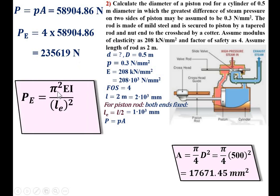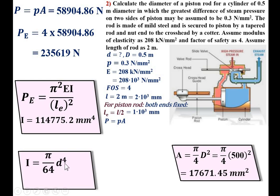Using Euler's equation P_E = π²EI / L_E², substitute P_E = 235619 N, E = 208 × 10³ N/mm², and L_E = 1000 mm. Solving for I gives I = 114775.2 mm⁴. Since the piston rod is a solid circular section, I = (π/64)d⁴. Substituting I gives the diameter d of the piston rod. Thanks, friends — please press the like button to appreciate this video.